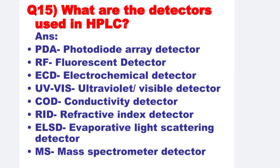Next: What are the detectors used in HPLC? The detectors are: photodiode array detector, fluorescence detector, electrochemical detector, ultraviolet-visible detector, conductivity detector, refractive index detector, evaporative light scattering detector, and mass spectrometer detector.